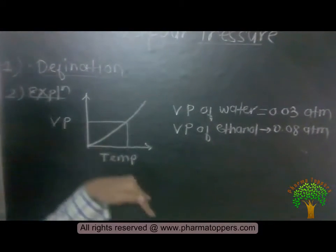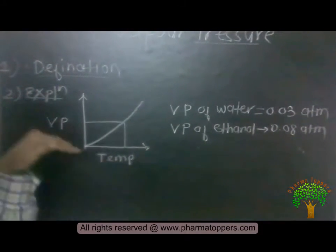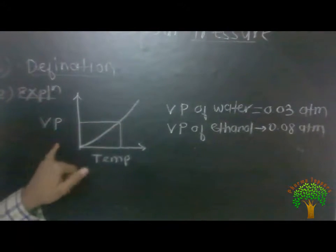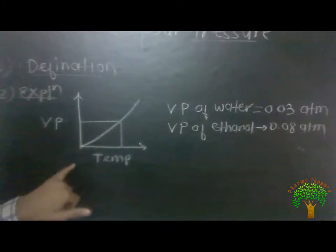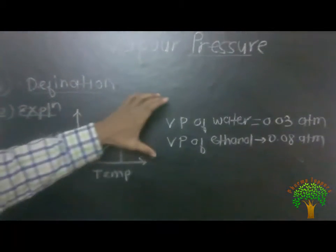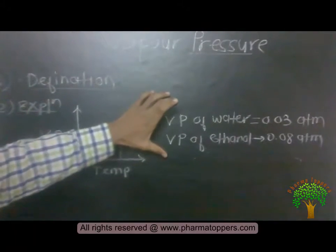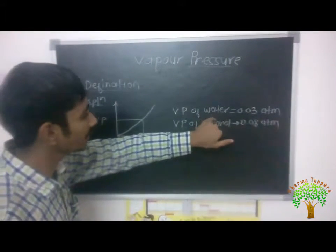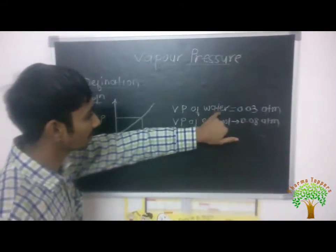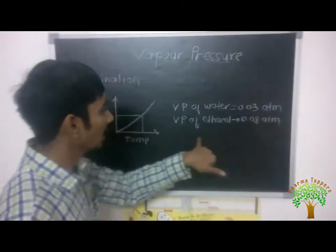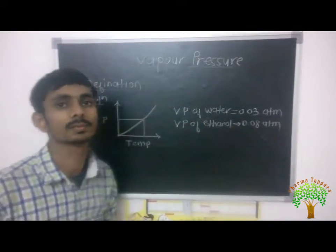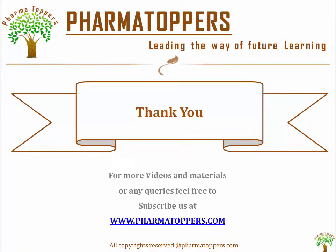If we decrease the temperature, Vapour Pressure also decreases. This is shown using water and ethanol as common examples. The Vapour Pressure of water is 0.03 atmosphere and the Vapour Pressure of ethanol is 0.08 atmosphere. Thank you.